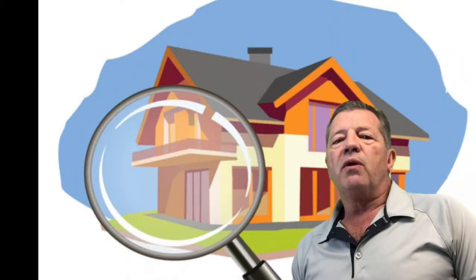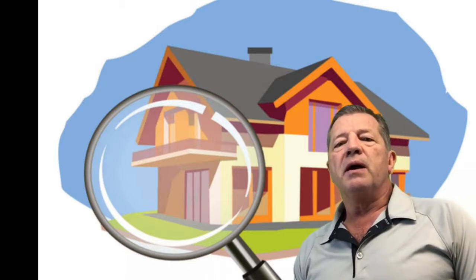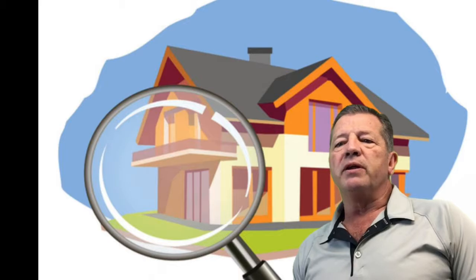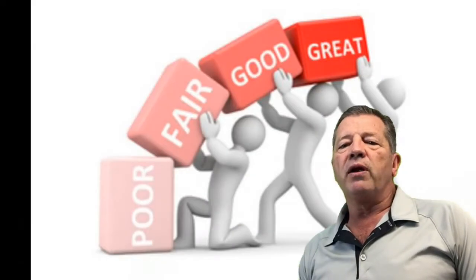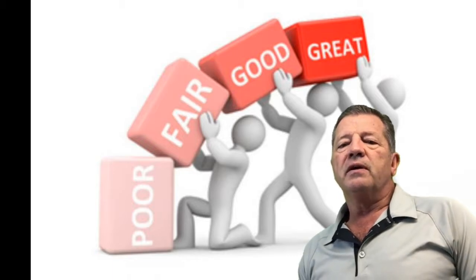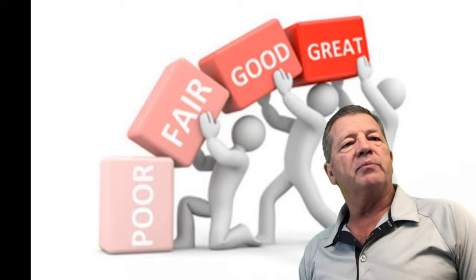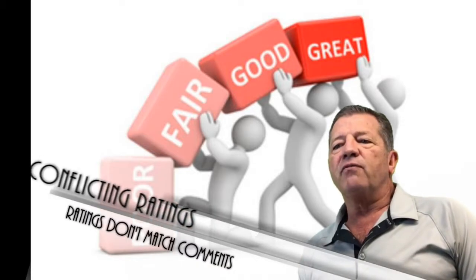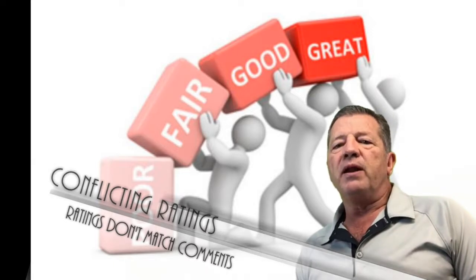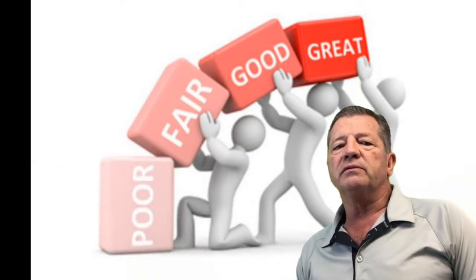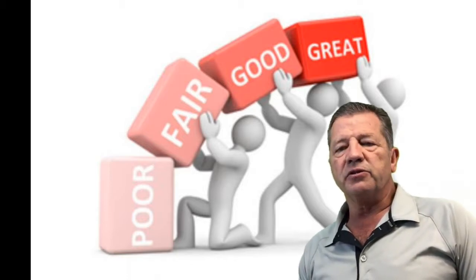The appraiser is required to develop an opinion about the quality and condition of the property. Often times, the comments provided within the body of the appraisal are in conflict with the property ratings provided by the appraiser. For example, the appraiser indicates that the house is average quality construction in the comments, but has rated the property as C3 or good quality construction. The same can apply for condition or other elements associated with the property.